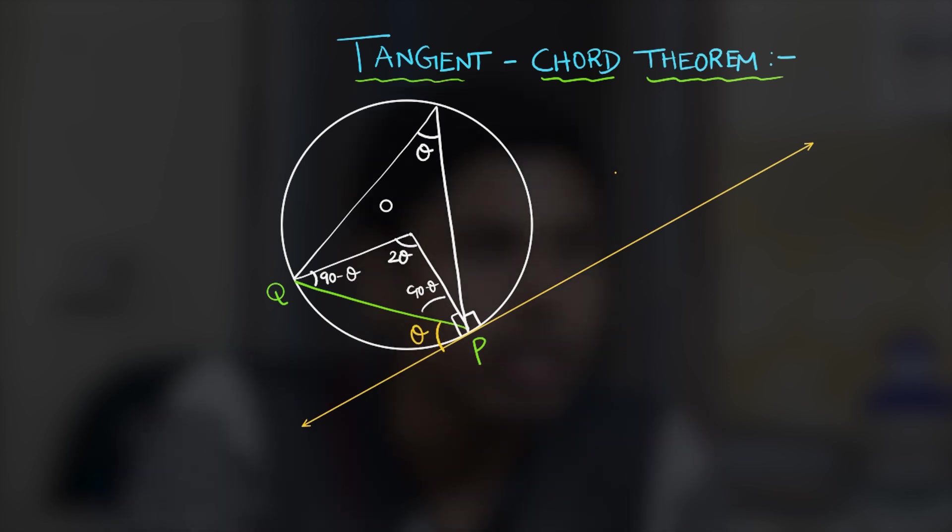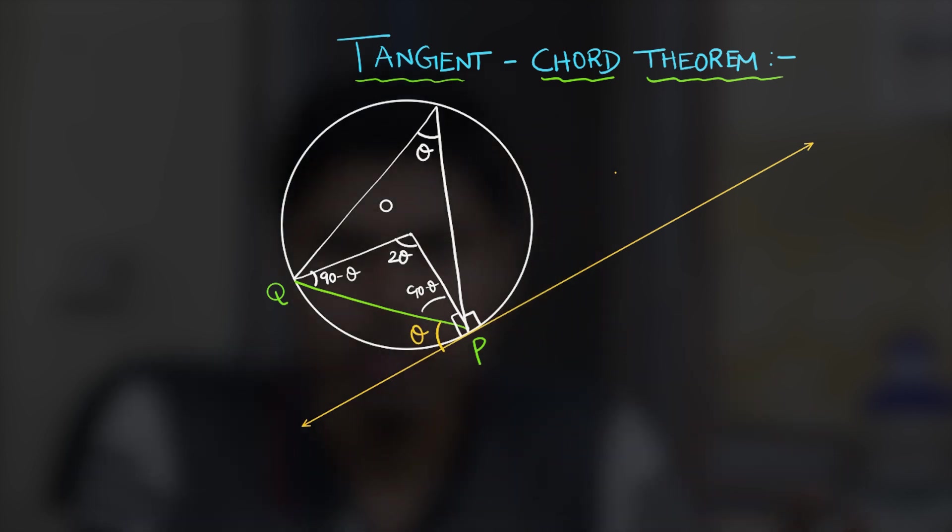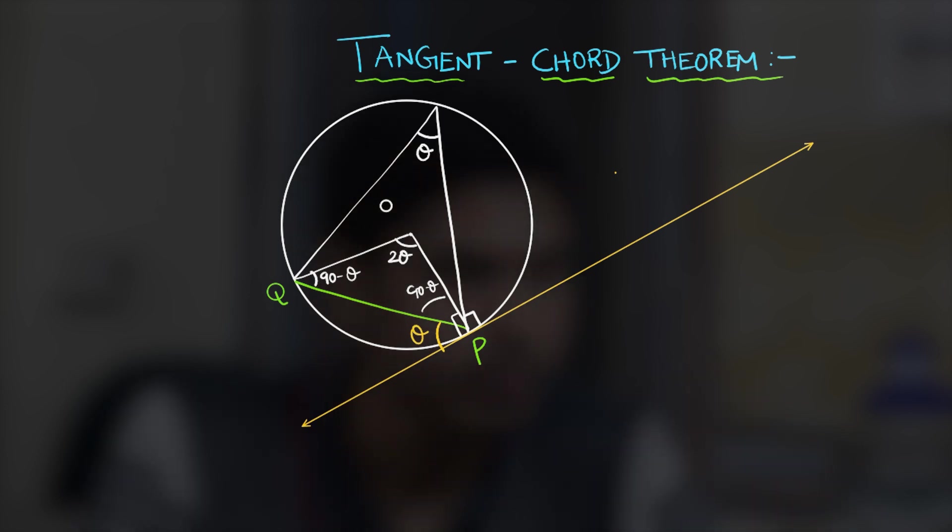So we will inculcate this configuration a couple of times in the Humpty Dumpty points and its properties. Now we will move on to radical axis. What is radical axis? Before learning this we will give a quick glance on power of a point.